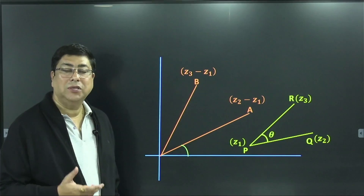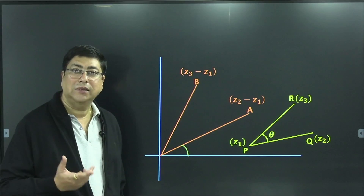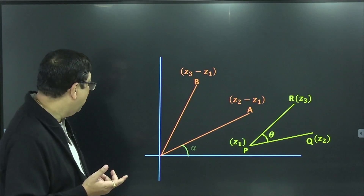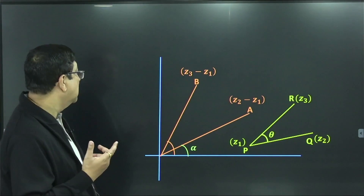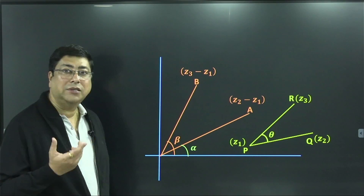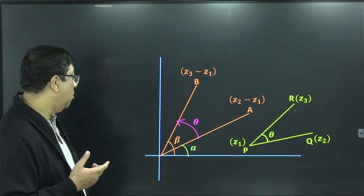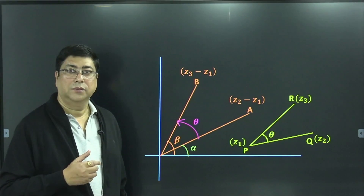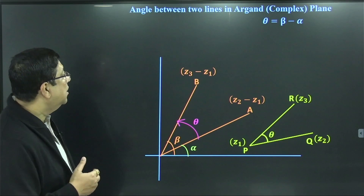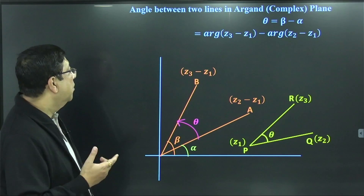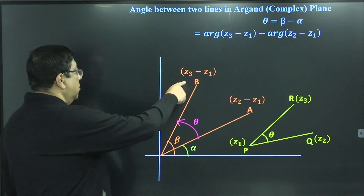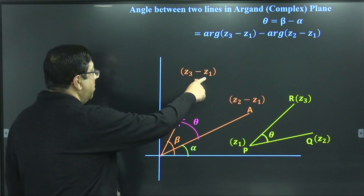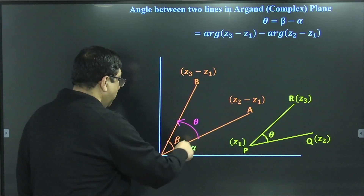Suppose the angle which the line OA makes with the positive direction of the x-axis is alpha. It means the argument of Z2 minus Z1 is alpha. And suppose the argument of B, that is Z3 minus Z1, is beta. Naturally, the angle between them is theta, which is anti-clockwise. So theta is the argument of Z3 minus Z1 minus the argument of Z2 minus Z1.